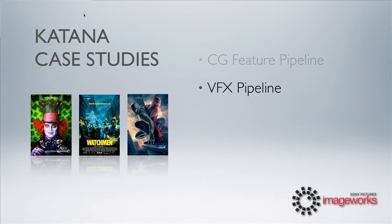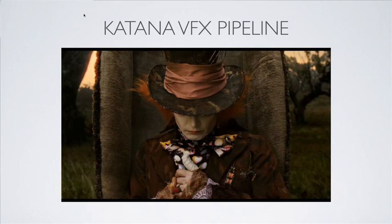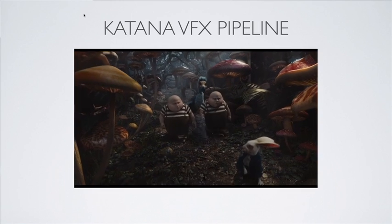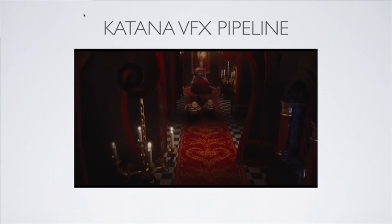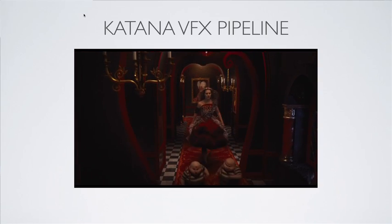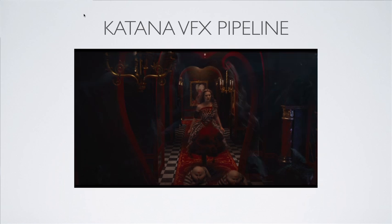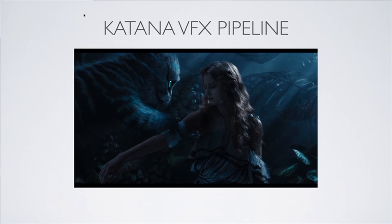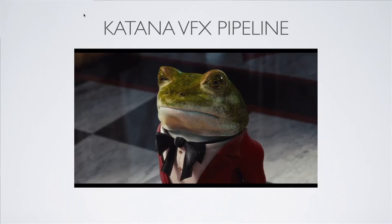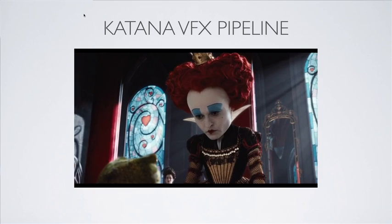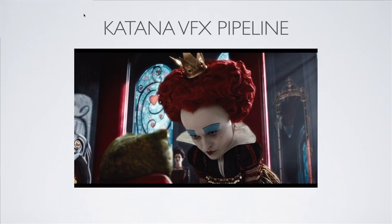Now I'm going to talk about visual effects pipelines and how Katana handles them. The name of the game for visual effects pipelines is complexity. Here are some shots from Alice in Wonderland, and what I want you to realize is just how complex the different shots are — both in terms of geometry, and more interestingly, the pipelines themselves are rather complex. In animated features you might have many shots that are similar to each other, but in a visual effects film like Alice in Wonderland, many more shots are one-offs that only handle specific cases.